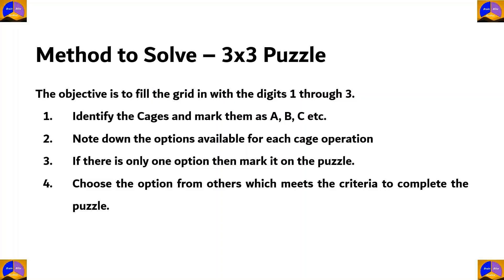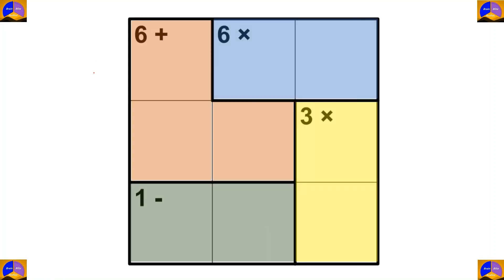This is the method we are going to use to solve a three by three puzzle. The objective is to fill the grid with the digits one through three. Step one: identify the cages and mark them as A, B, C, etc. Step two: note down the options available for each cage operation. Step three: if there is only one option, mark it on the puzzle. Step four: choose the option from others which meets the criteria to complete the puzzle.